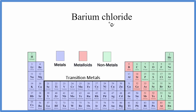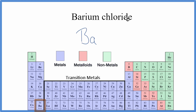To write the formula for barium chloride, we'll go to the periodic table and look up barium — that's Ba — and then chloride, we're talking about chlorine — that's Cl. Barium is a metal, and chlorine is a non-metal.